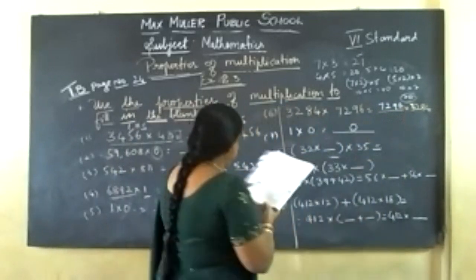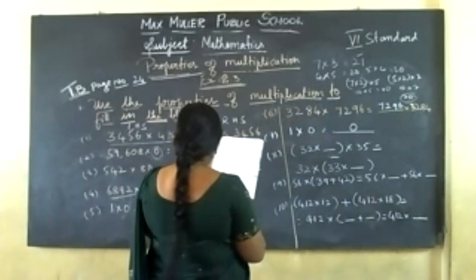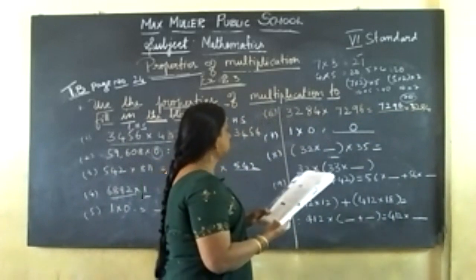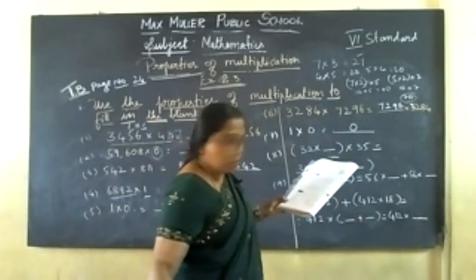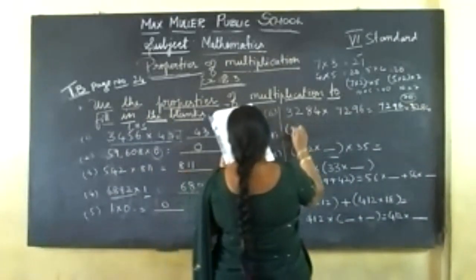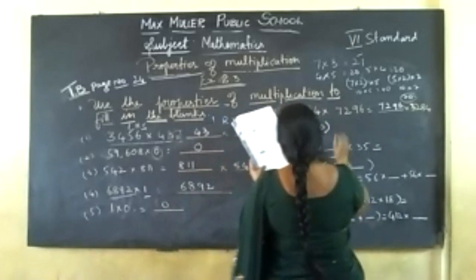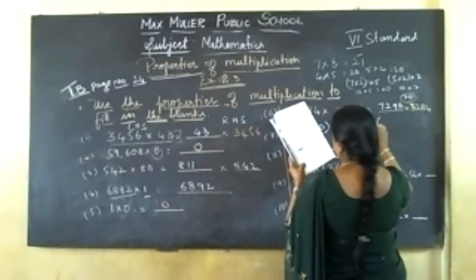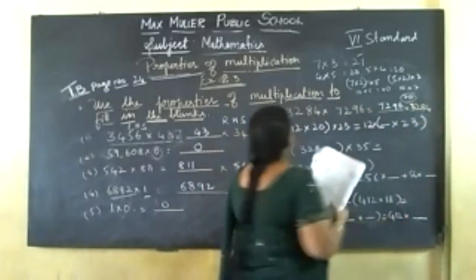Question number 7: 12 into 20 close bracket into 23 is equal to 12 open bracket dash into 23. This is question number 7. See here, left hand side, right hand side: 12 is there on both sides, 20 is missing on the right side. 23 is on both sides. So 20 is the answer.